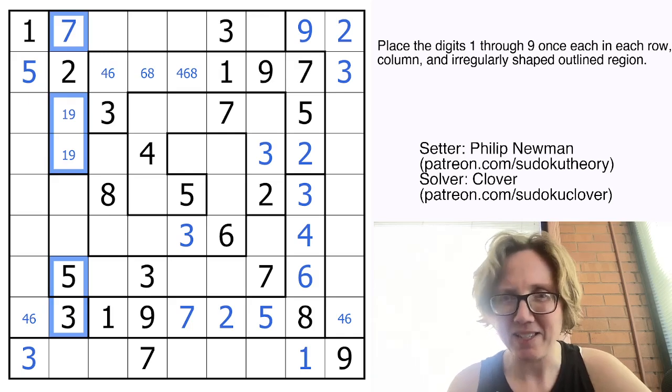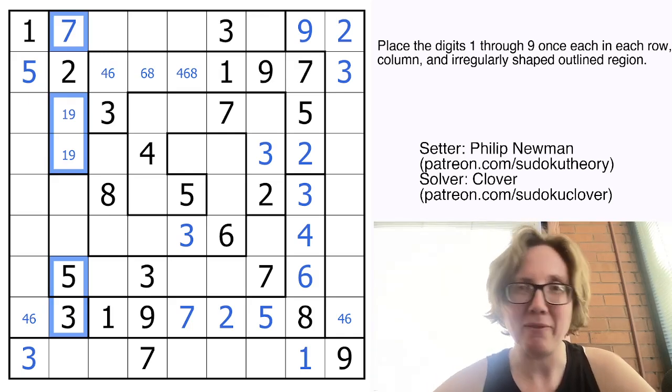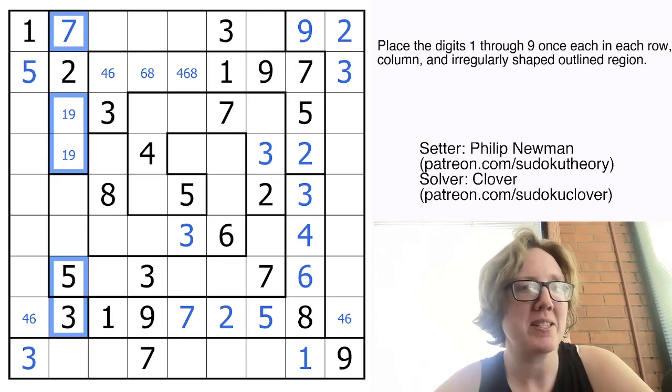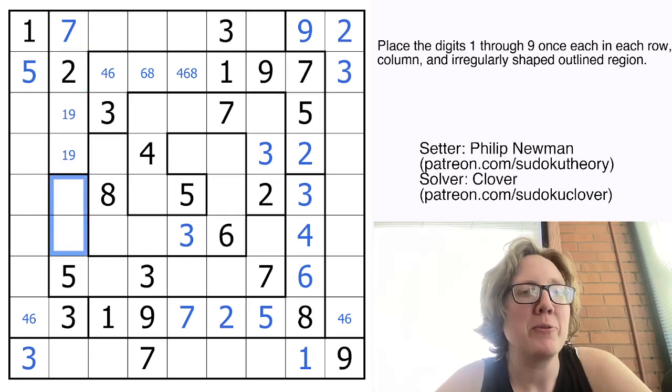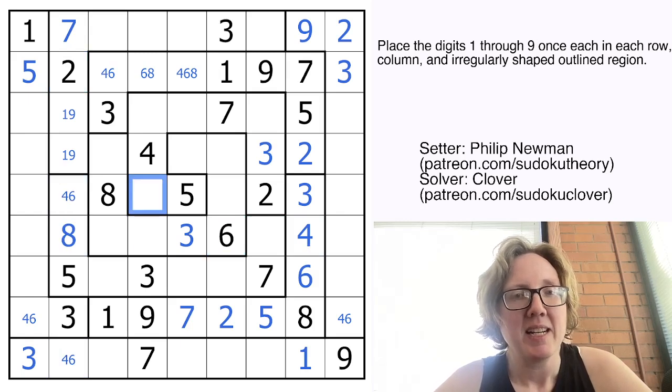Just because I find that my brain anyways is more likely to kind of latch on to, oh, it's all odd or it's all even versus just like some random set of digits. Anyways, here I can tell pretty quickly that I still need four, six, and eight. This can't be the four or six. So that's the eight. Perfect.